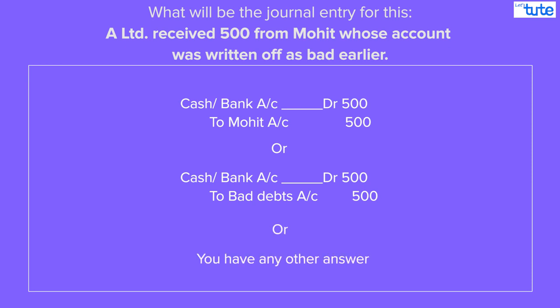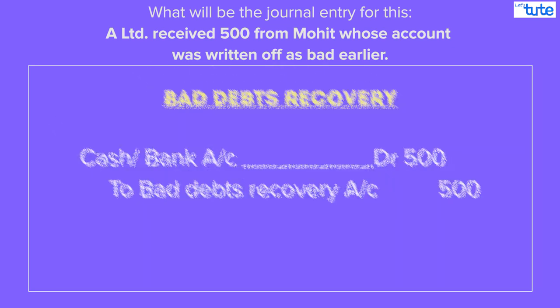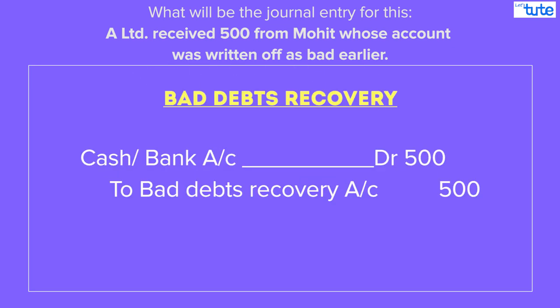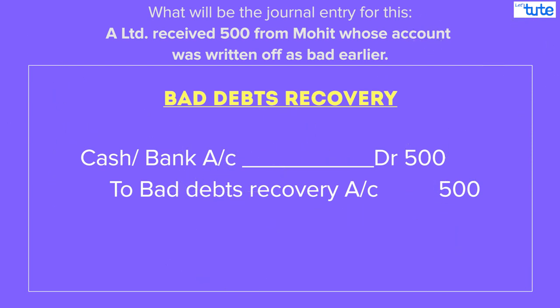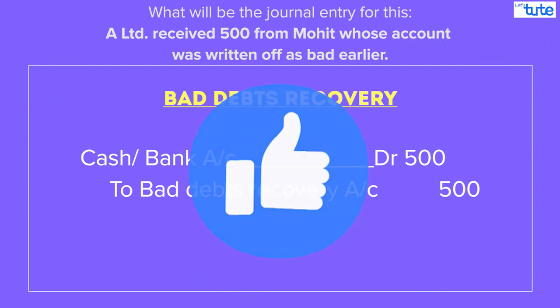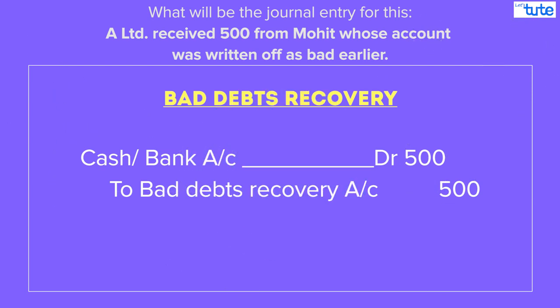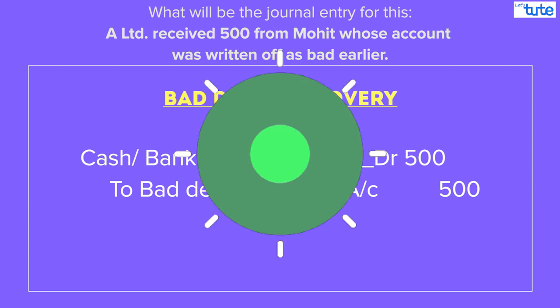Friends, this is a transaction of bad debts recovery and the correct answer is cash/bank account debit 500 to bad debts recovery account 500. I think many of you would have guessed it correctly and that's great. But if you could not, then don't worry.